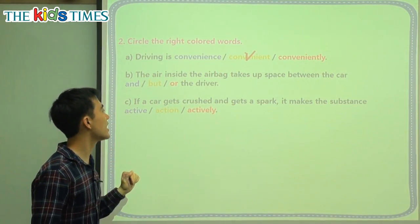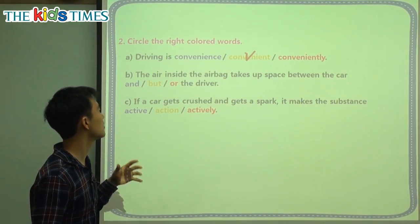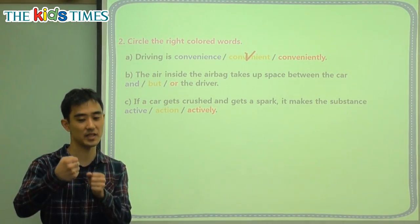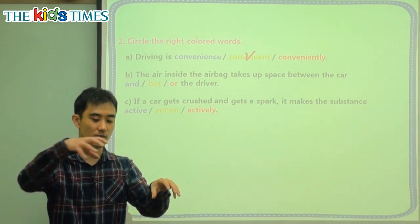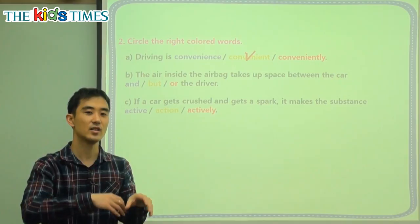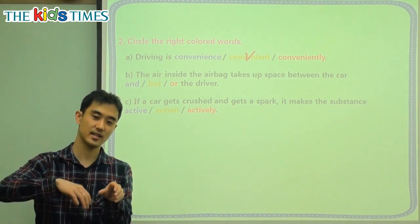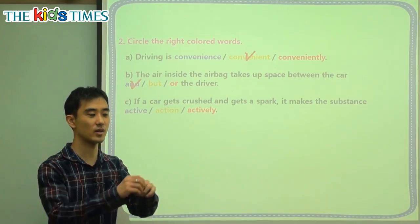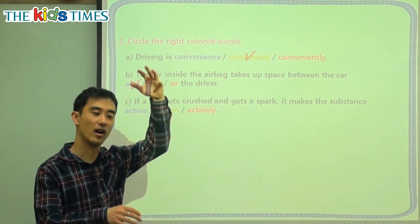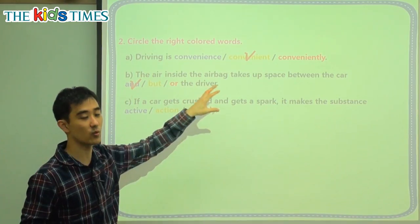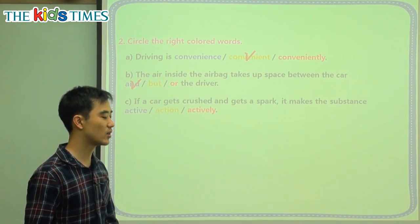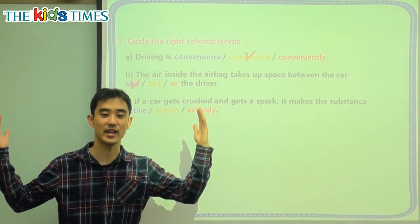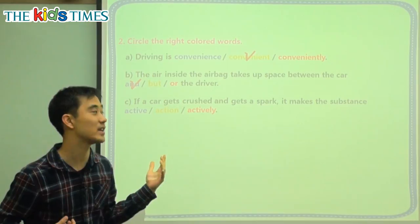B: The air inside the airbag takes up space between the car blank the driver. We have the steering wheel on one side and the driver on the other, and the airbag is between them. So we say 'and.' When we use the preposition 'between,' we say 'and' — between my left hand and my right hand is my face.